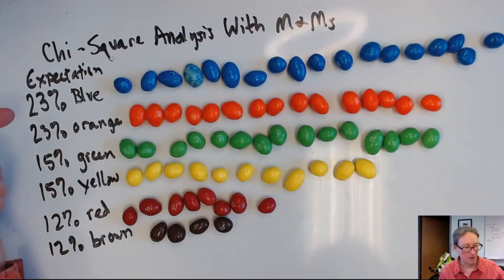Right, so I'm supposed to have 23% blue, 23% orange, 15% green, 15% yellow, 12% red, and 12% brown.